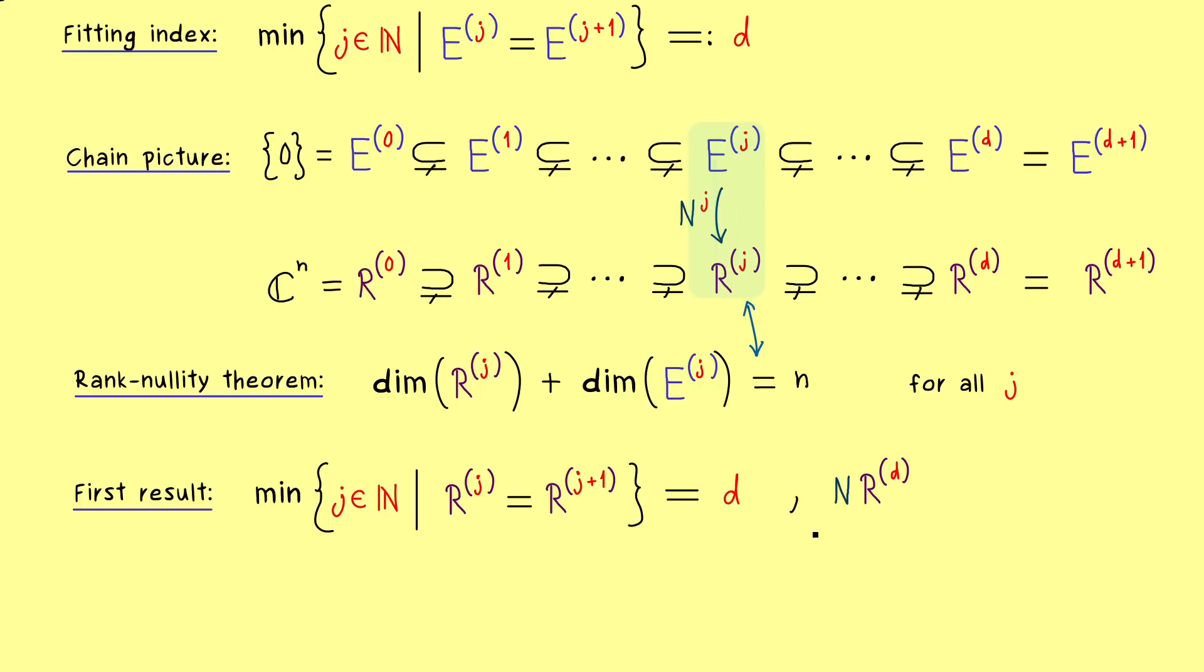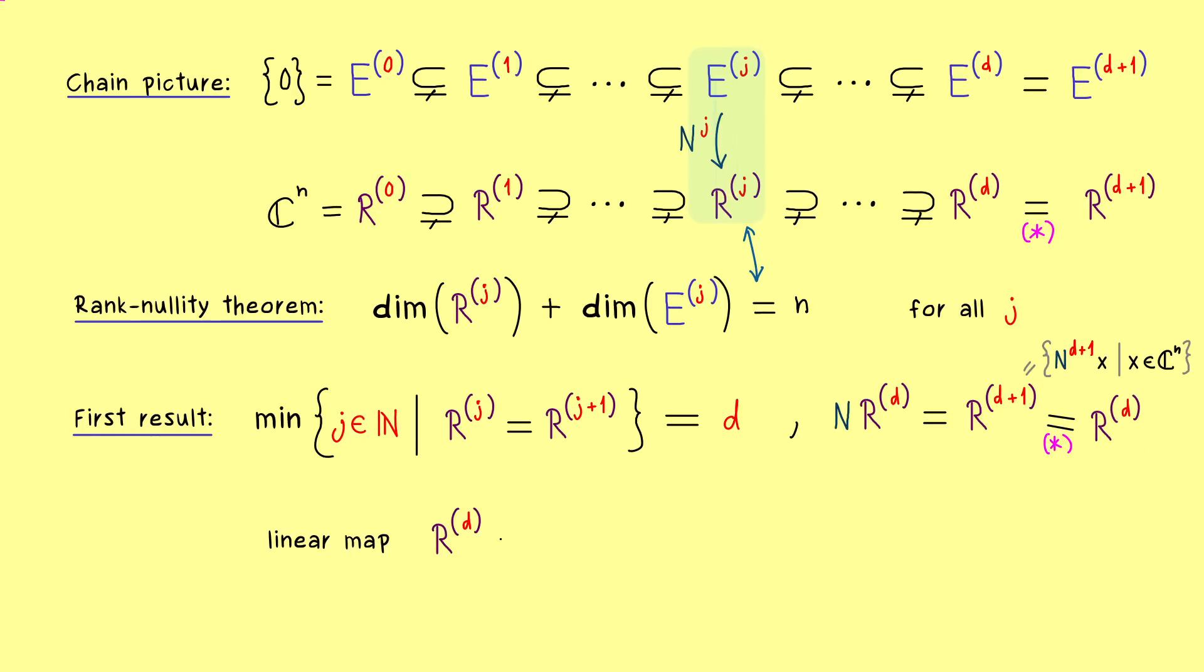Namely, if you apply N to each element of R^d, what comes out is the whole set R^(d+1). This follows from the definition, because R^(d+1) can be written as N to the power d+1 applied to any vector x in C^n. If we do it for R^d and apply one N from the left, we get the whole set on the right-hand side. However, now the good thing is that this set on the right-hand side is actually R^d again. At this point, we can use the result from before. This is a crucial result because it tells us that we have a surjective map. More precisely, we have a linear map from R^d to R^d given by the matrix N, and this is surjective. However, since we have linearity and the same dimension on the right and left-hand side, we actually have a bijective map. So also a very nice result: for our fitting index d, our matrix N represents an isomorphism between the two ranges.